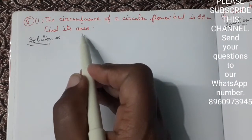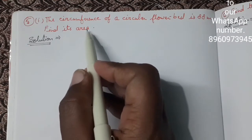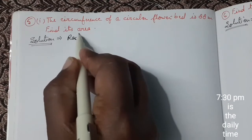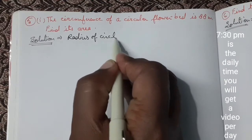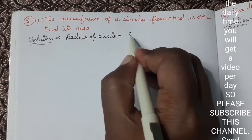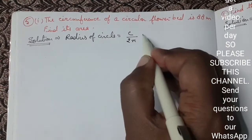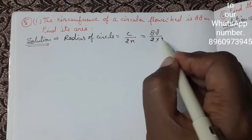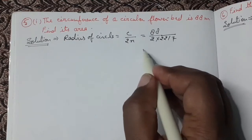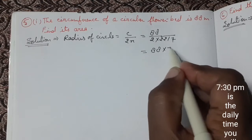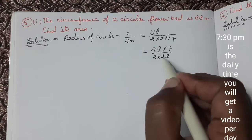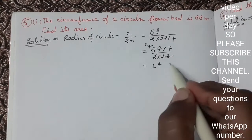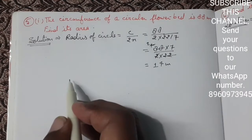Here we have the circumference of a circular flower bed and we have to find the area. Area is very easy if we have radius, but first we will find the radius. The radius of a circle equals C upon 2π. The circumference is 88, so we put 88 divided by 2 times 22 upon 7. Simplifying: 88 multiply 7 upon 2 multiply 22. This reduces to 14 meters as our radius.